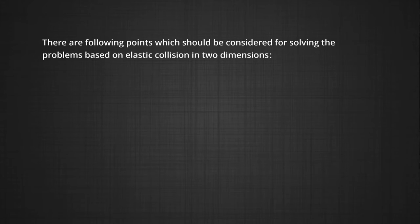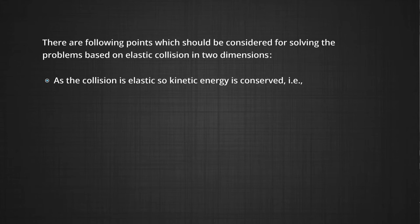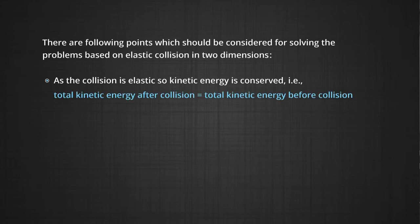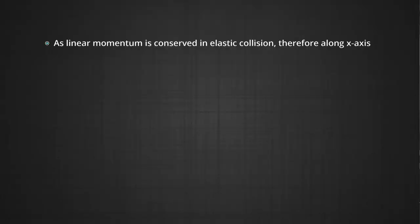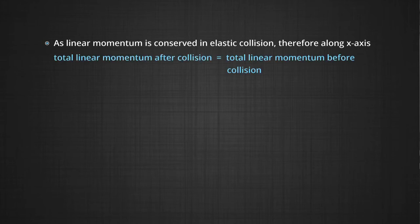First point: as the collision is elastic, kinetic energy is conserved. That is, total kinetic energy after collision equals total kinetic energy before collision, given by: M1·V1² + M2·V2² = M1·U1² + M2·U2². Second point: as linear momentum is conserved in elastic collision, along the x-axis, total linear momentum after collision equals total linear momentum before collision.